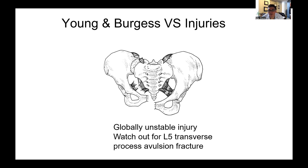Vertically unstable fractures or vertical shear fractures often occur from a fall from height, where one hemipelvis is driven superiorly. These can be either ligamentous or fracture dislocations with a sacral fracture, rami fractures, or both, with vertical migration of the hemipelvis. Those patterns are particularly good to treat with traction initially to bring the hemipelvis back down, which can also be useful to achieve your reduction in the operating room. Watch out for an L5 transverse process avulsion fracture — that's often a sign that there was a lot more displacement at the time of injury than you're seeing on your plain films in the ED.